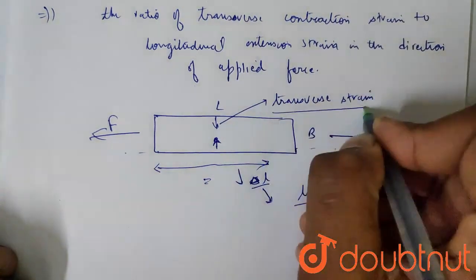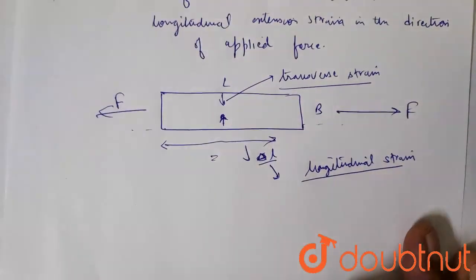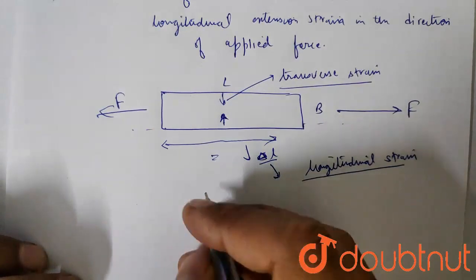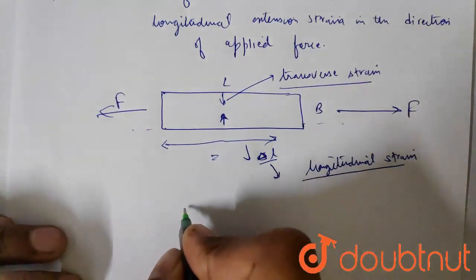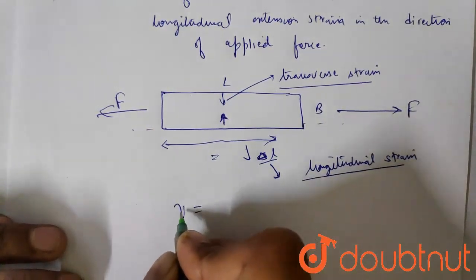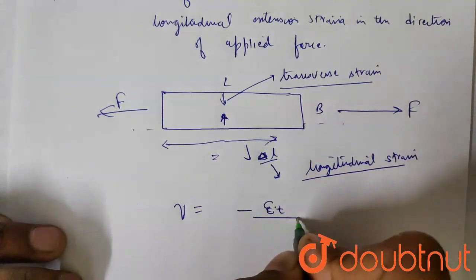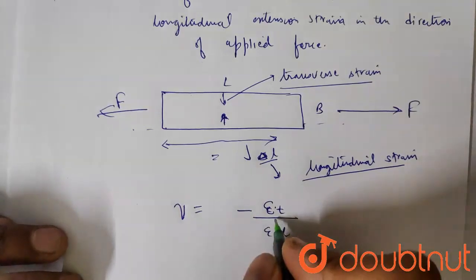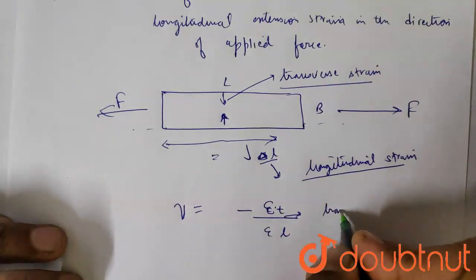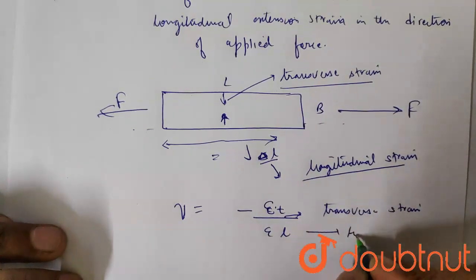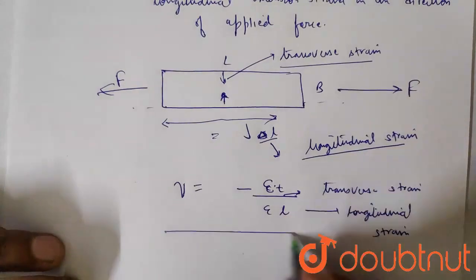It is a ratio only. Poisson's Ratio is represented by Mu, and the expression is Mu equals minus ET over EL, where ET is the transverse strain and EL is the longitudinal strain. This is the expression.